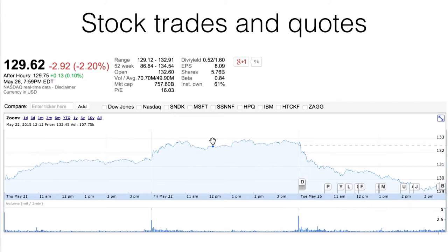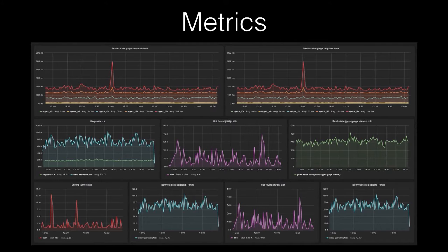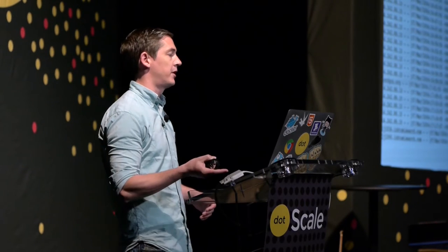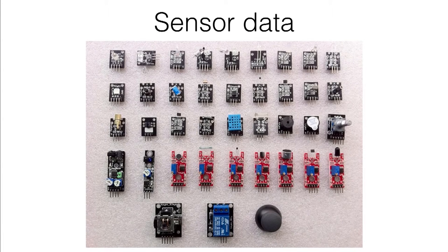A classic example is stock trades and quotes from finance. Here's one that's near and dear to everybody's heart in this theater: metrics from DevOps, things coming off your servers and your applications. User analytics is another example. Raw event streams like this log file — you have tons of time series in here: 200 responses over time, 401s, 200s on specific URLs. And sensor data is coming up a lot more frequently lately.